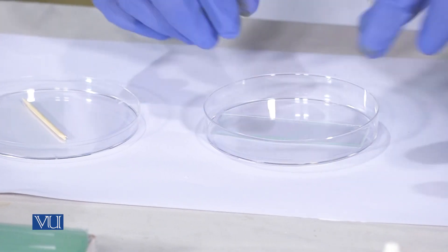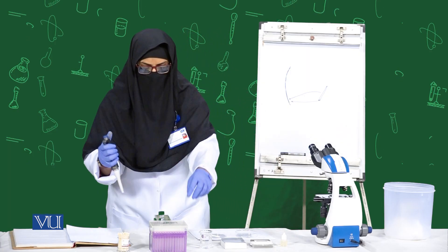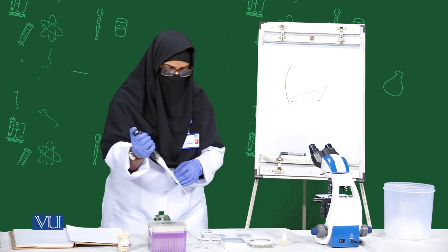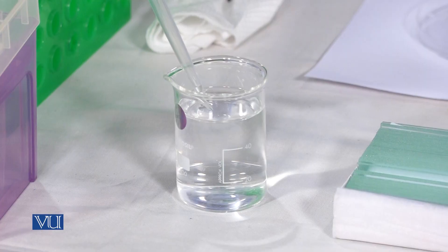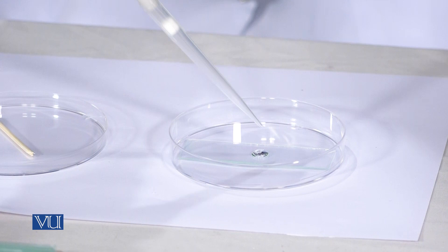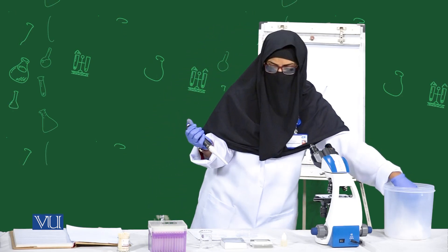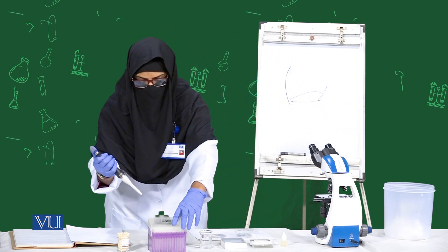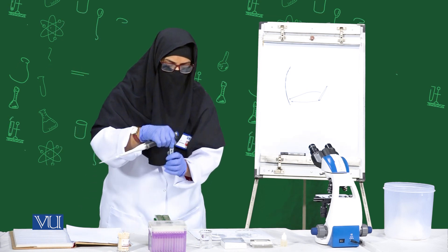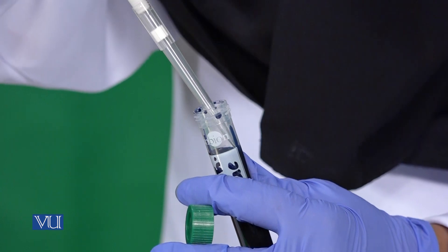We have already taken a sample. First, we will put the slide inside the petri dish and apply a small droplet of water, avoiding air bubbles. Then we will add a small droplet of methylene blue.